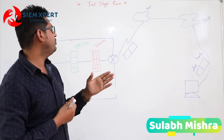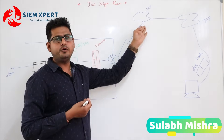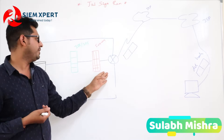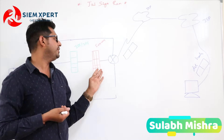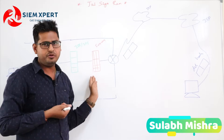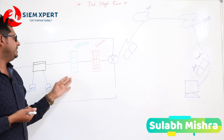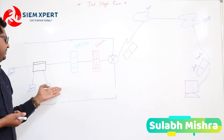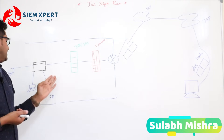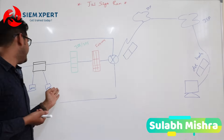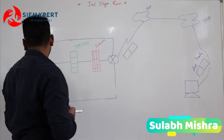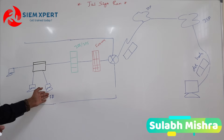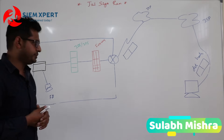In a typical corporate network, we take the internet connection through an ISP and it connects to the gateway router. Behind the router, you might have the firewall, you might have IPS/IDS, you might have a proxy, email gateway, and other security devices. Through switches, you connect your end devices like systems, laptops, desktops, and servers.